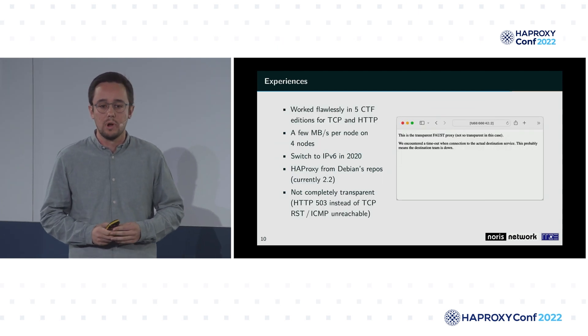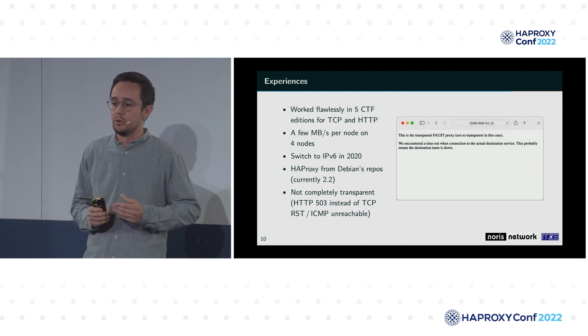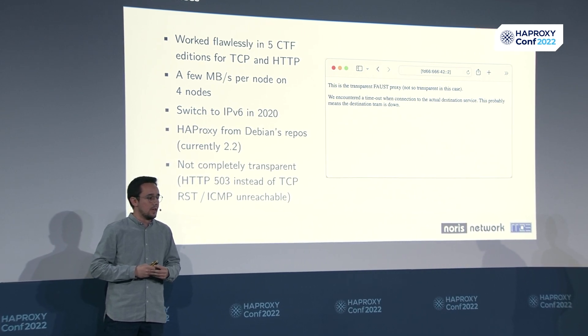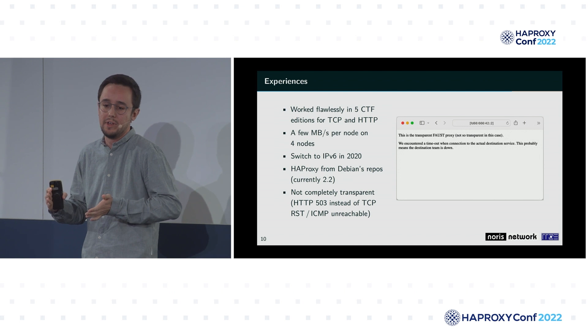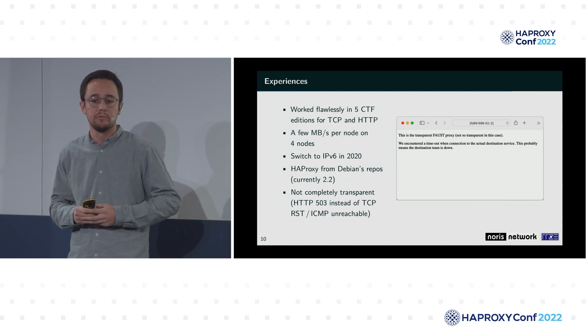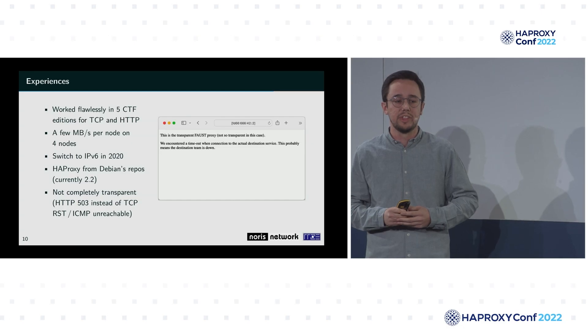What were our experiences with this setup? We've used it in five CTF editions so far and it has worked pretty flawlessly. The TCP part is much simpler — non-HTTP services get a new connection to hide TCP stack details, but no header modifications. Our traffic numbers are not that impressive — a few megabytes per second — nothing too interesting in terms of volume. We started with IPv4, switched to IPv6 in 2020, and that worked without any issues. We use HAProxy open source community edition, just the packages from the Debian repositories.